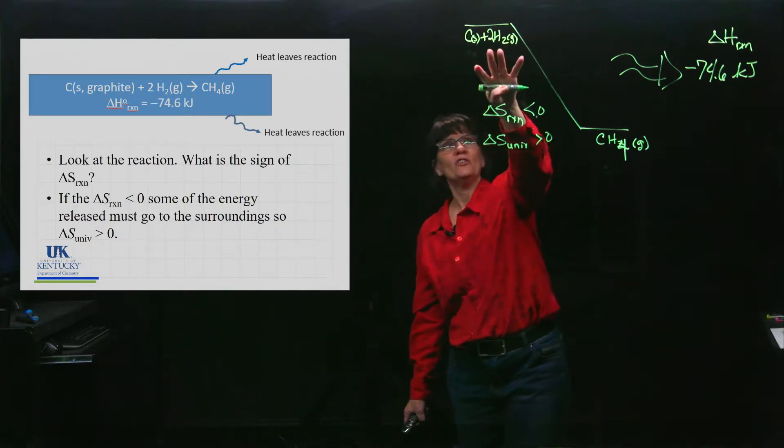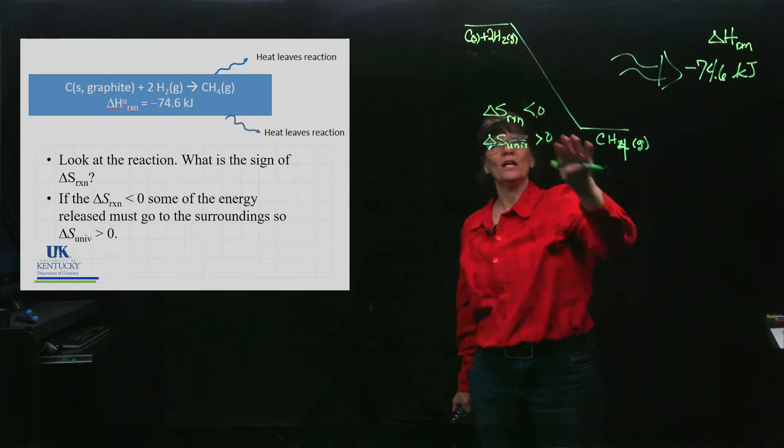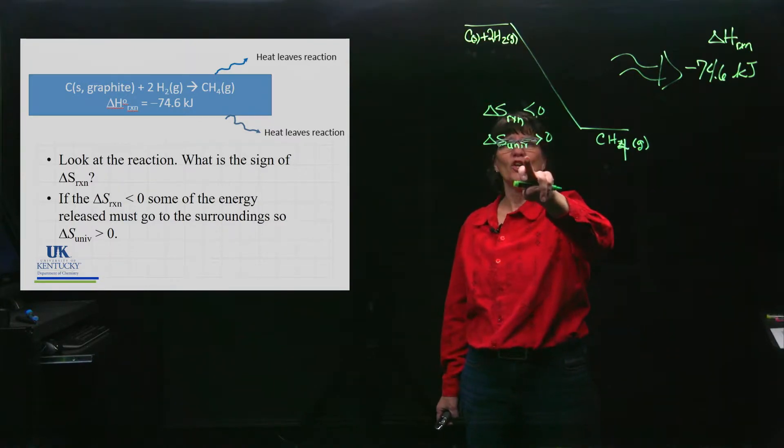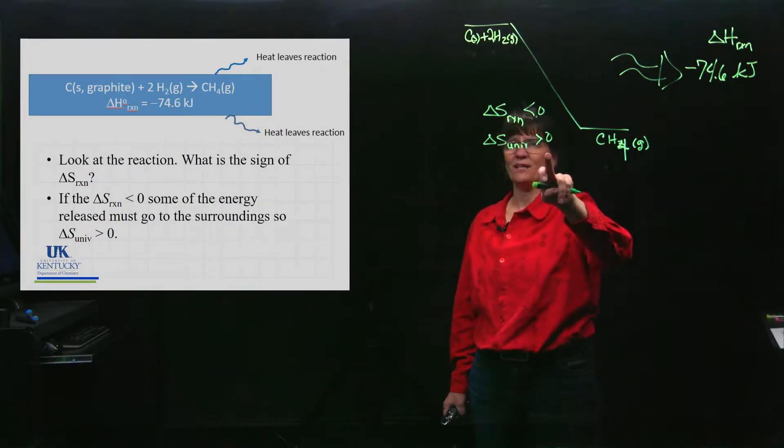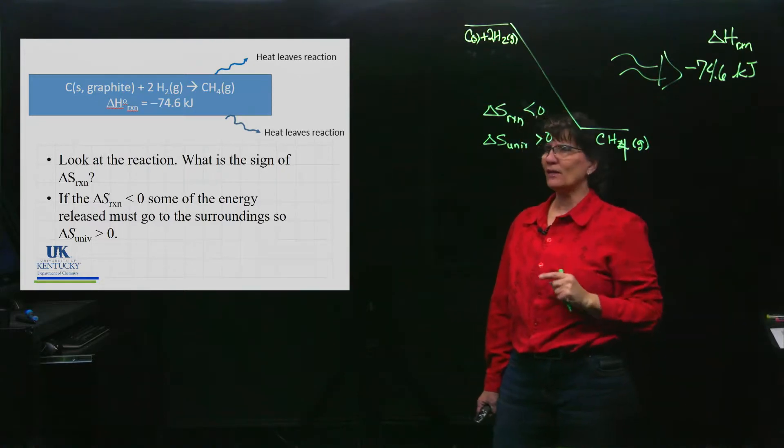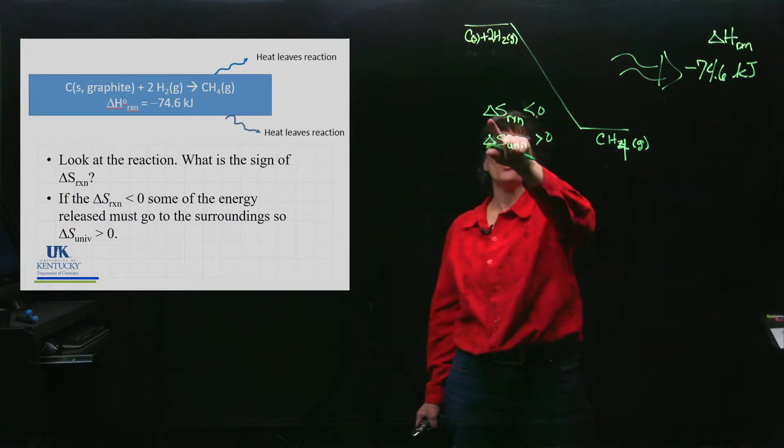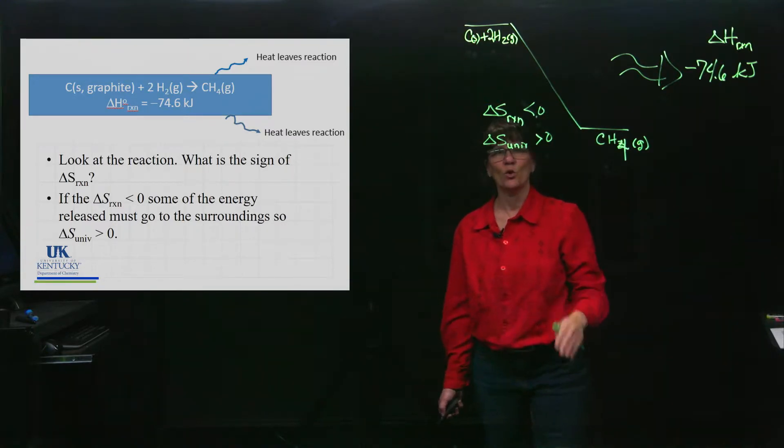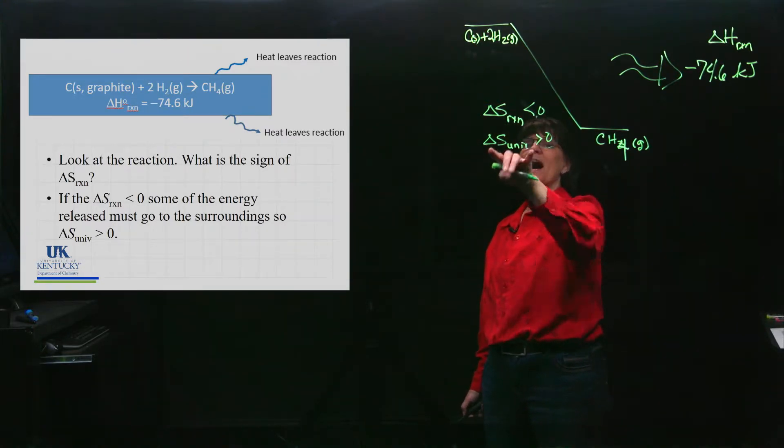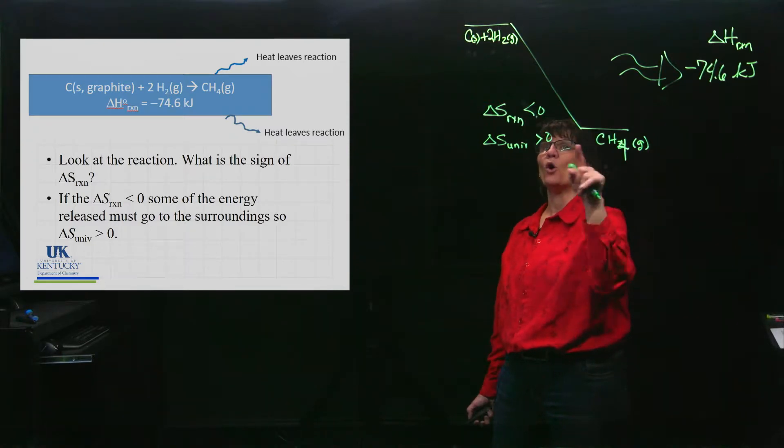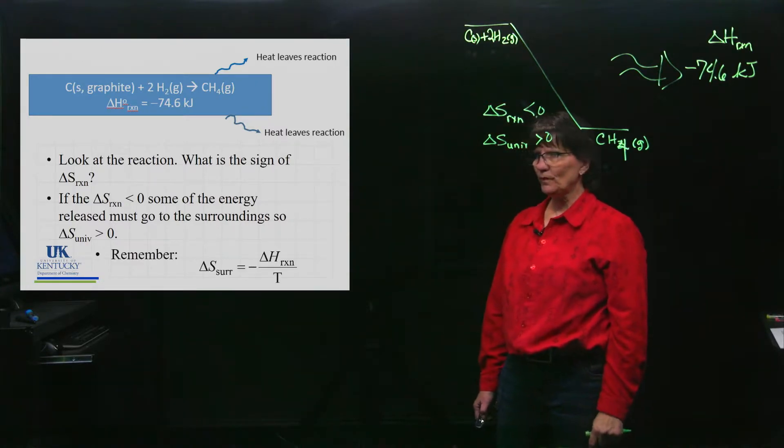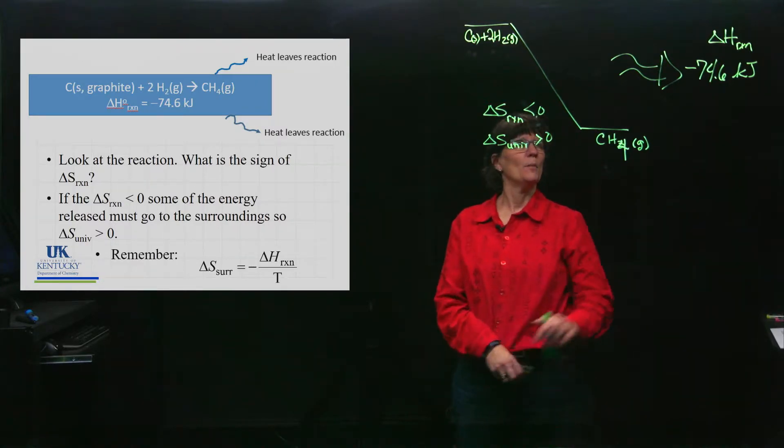The only way a reaction can be spontaneous is if the ΔS of the universe is greater than zero. So if the reaction has a negative ΔS but the ΔS of the universe must be positive, then the surroundings better be positive and more positive than the reaction is negative.